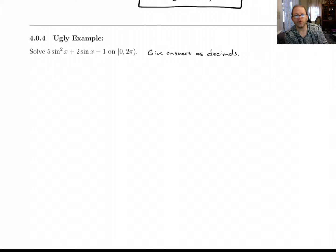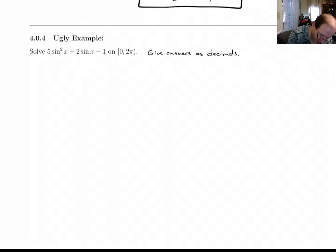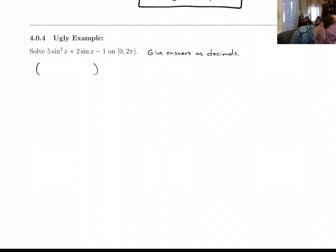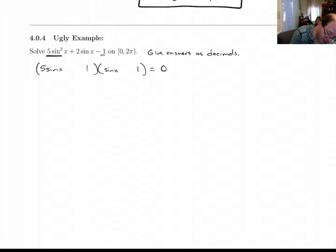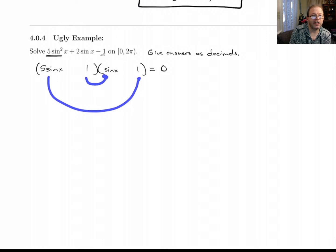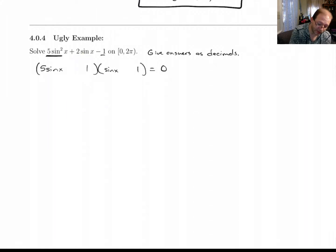Let's look at example 404. I've ominously called this the ugly example because the answers are kind of ugly. The first thing I would do on a problem like this is try to factor it. If this thing would factor, it would have to split into 5 sine x times sine x, and the 1 would have to split into 1 times 1. Multiplying outside and inside gives 5 sine x and sine x, and adding or subtracting gives 4 sine x or 6 sine x — you can't get 2 out of it, so this thing won't factor.